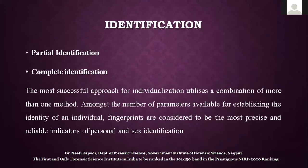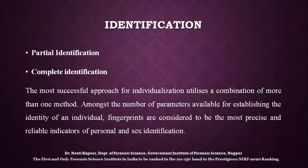Fingerprints can be either partially identified or completely identified. Partial identification implies only certain important information about the identity, like sex, age, stature, race, etc., while other details still remain unknown. Complete identification means the absolute fixation of the identity of a person. The most successful approach for identification utilizes a combination of more than one method. Among all available parameters, fingerprints are considered the most precise and reliable indicators of personal identification.